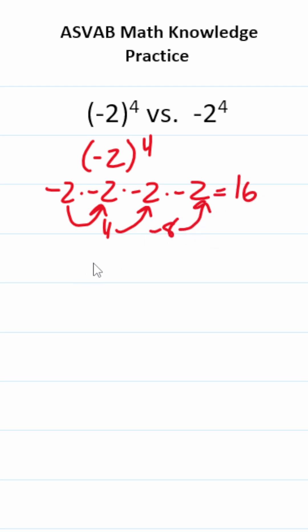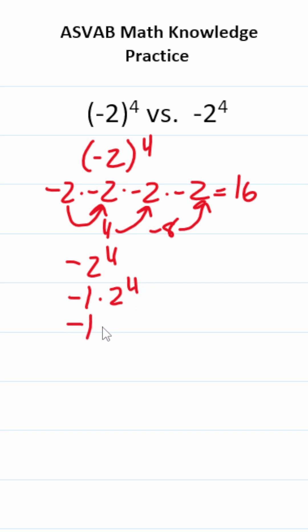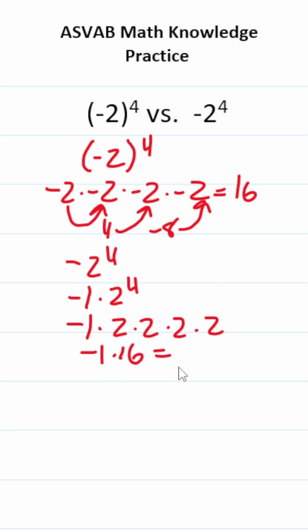If you don't have parentheses, however, you break this apart like this: negative 1 times 2 to the 4th. Then you follow the order of operations — you do exponents before multiplication. So this becomes negative 1 times 2 times 2 times 2 times 2. We know this is 16, so this is negative 1 times 16, which gives us negative 16.